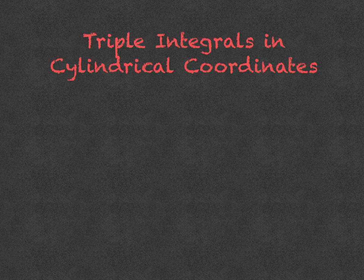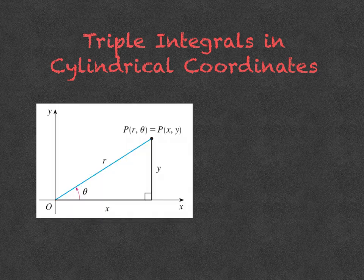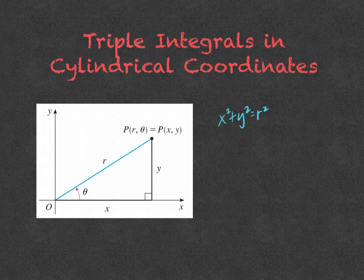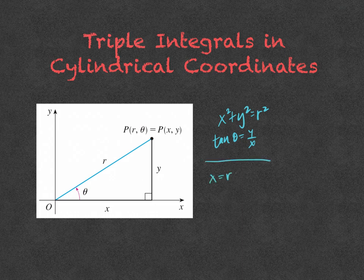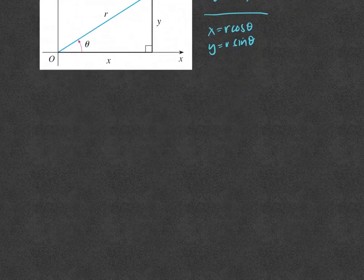In cylindrical coordinates, let's back up for just a minute. We know that x squared plus y squared equals r squared, and theta equals inverse tangent of y over x, or tangent of theta equals y over x. And if you're switching from polar to rectangular, x equals r cosine theta and y equals r sine theta. Now in three dimensions, we have a coordinate system called cylindrical coordinates. Let's look at cylindrical coordinates and think about how that compares to polar coordinates.